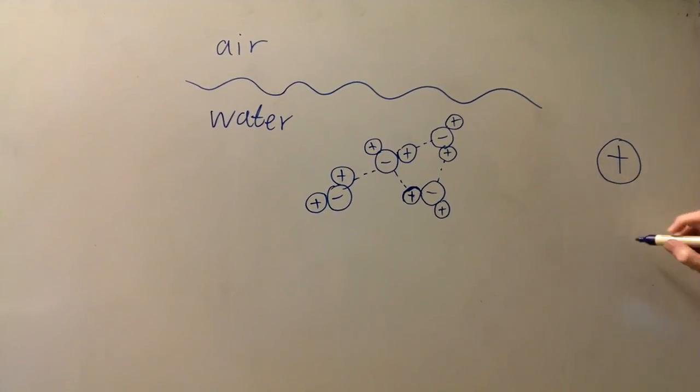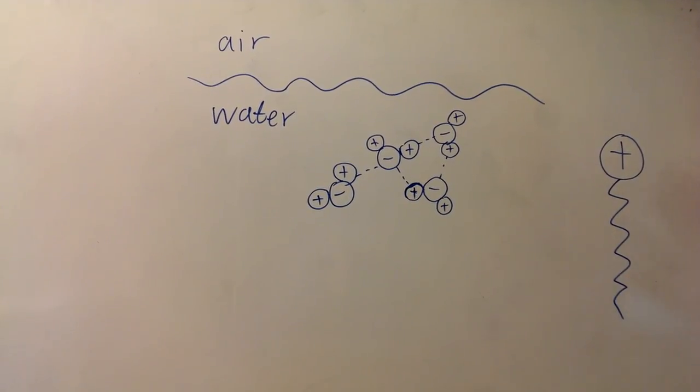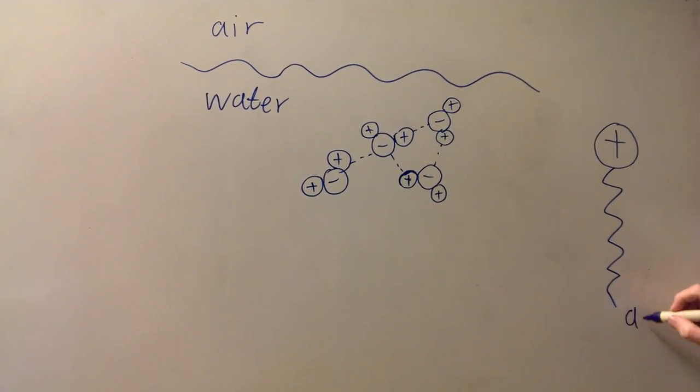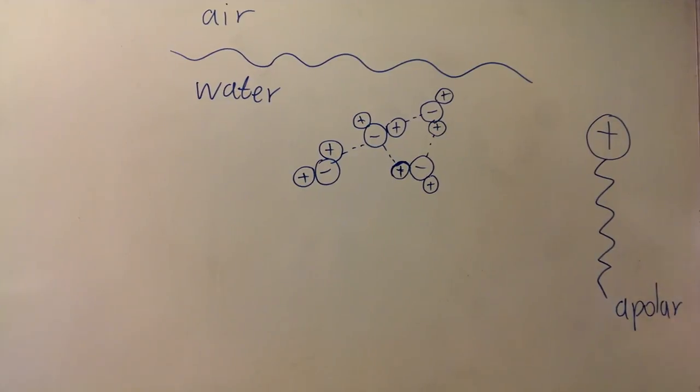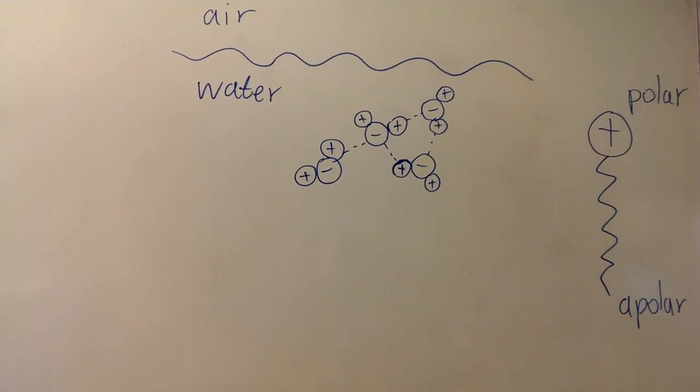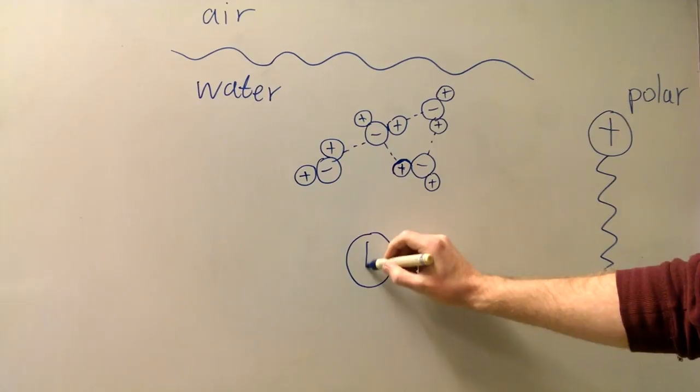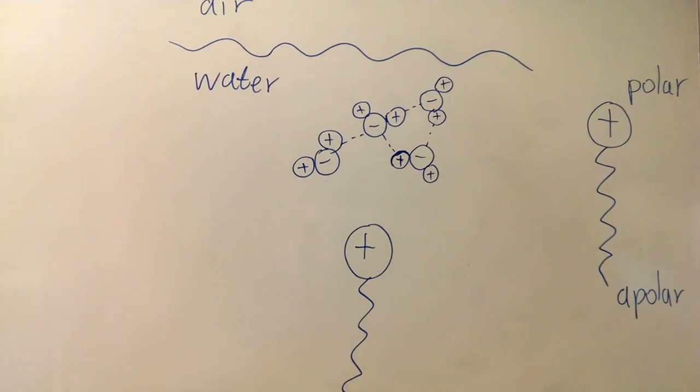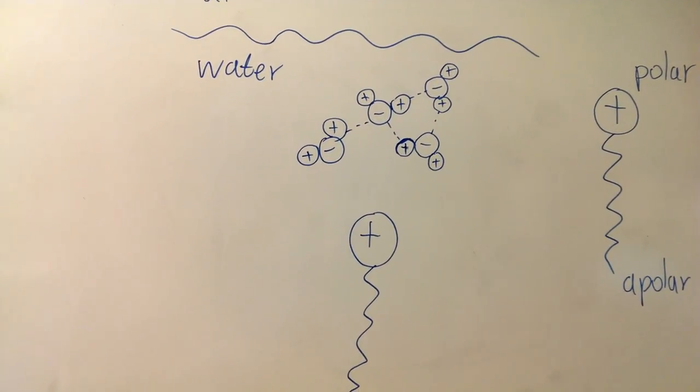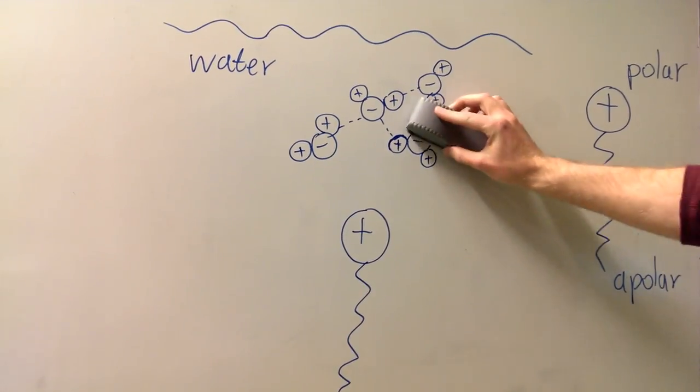So what happens when you add soap? Soap molecules consist of a charged head and a long uncharged tail. When soap is added to the water the water molecules will be attracted to the head of the soap molecule. And as such the network of hydrogen bonds is destroyed.